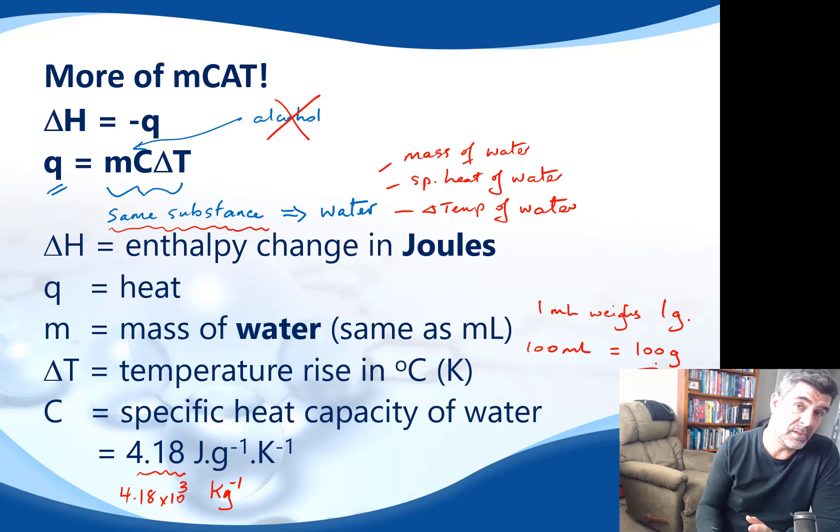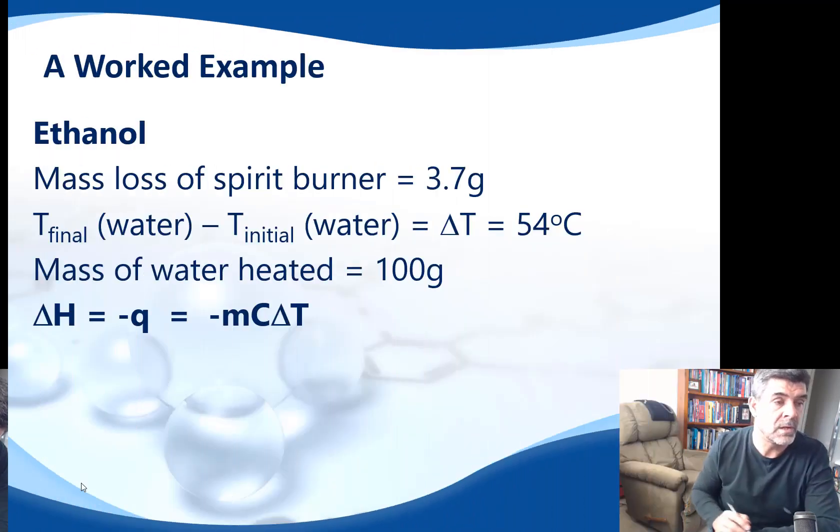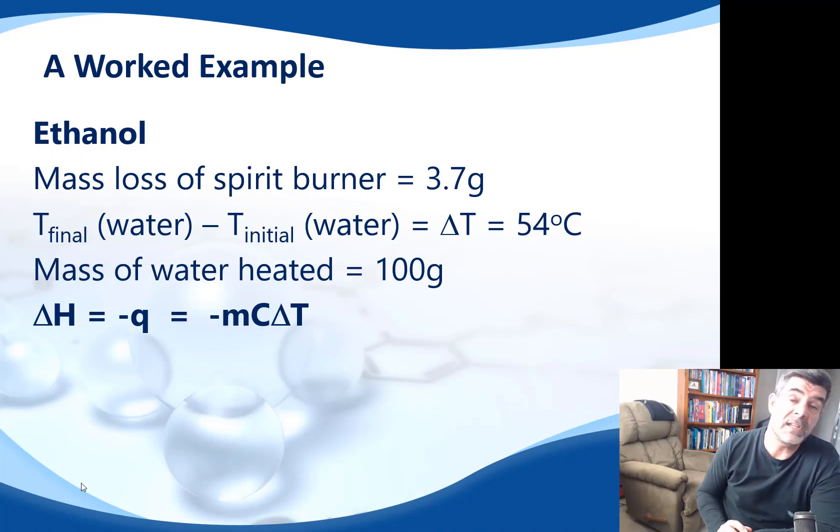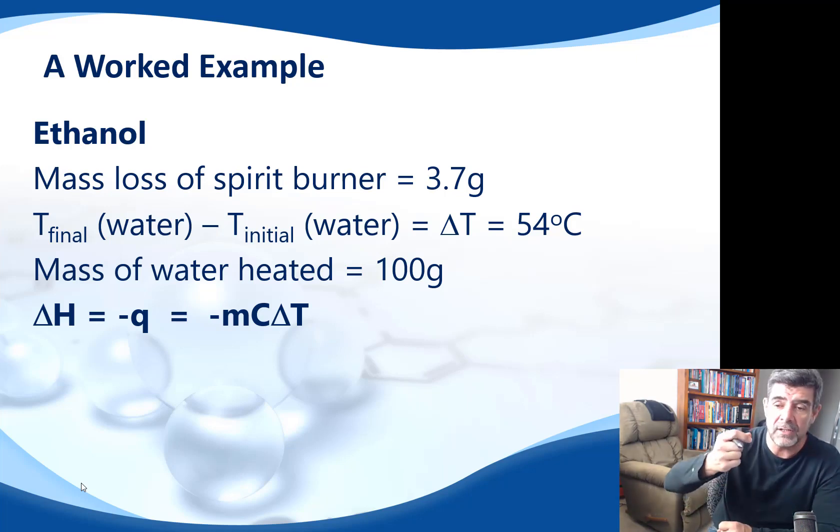It may also, because of the size of the quantities that we tend to get with these sorts of calculations, that you change joules into kilojoules just to make the numbers a little bit easier to deal with. But let's look at a specific example. So one of the fuels that I expect that you will use is ethanol. Here are some values. The mass loss of the spirit burner was 3.7 grams. Most of you will carry out this experiment with some little spirit burners that will contain the alcohol in them, and will have a wick that you can light, and therefore burn that fuel in order to produce energy and heat the water.